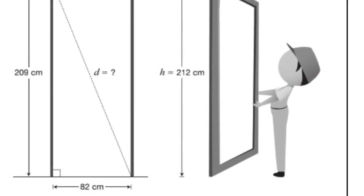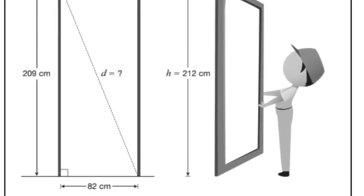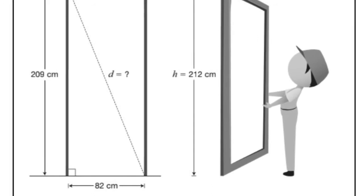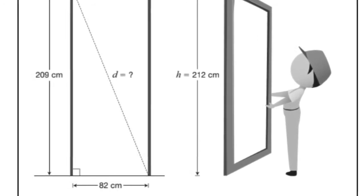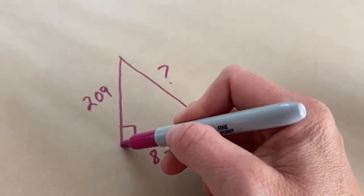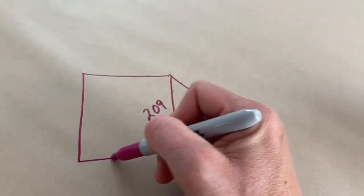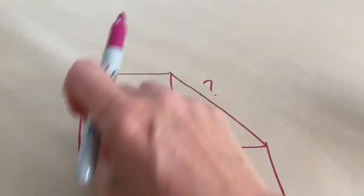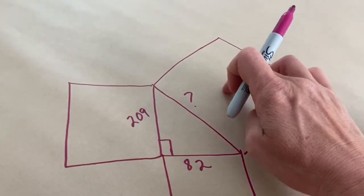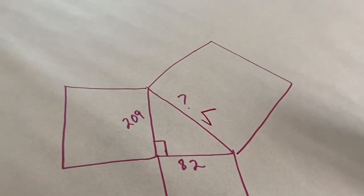So here is the question from your summative. You want to look for where you see the right angle triangle — I see a right angle triangle with the 209, the number across the bottom, and d equals question mark. That's the right angle triangle you would want to draw on your piece of paper and draw the squares on the outside to find d. You'd do 82 times 82 for one square, 209 times 209 for the other, add those two small squares together to get the big square, and then press the square root button on your calculator to find this side.